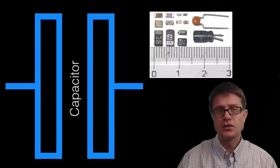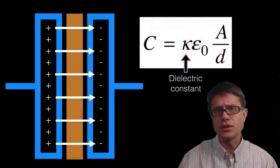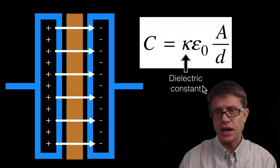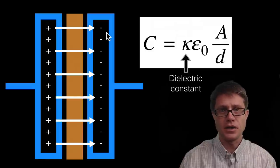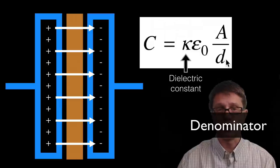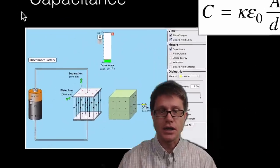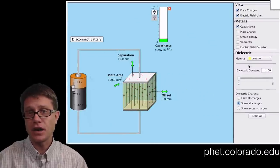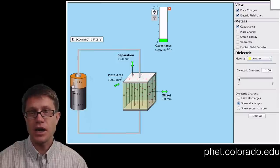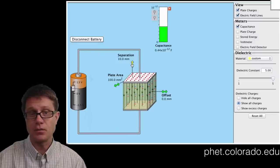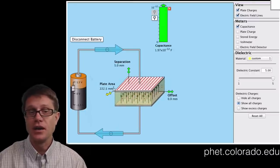Now let's move to the capacitor. A capacitor has two plates and charge builds up on either side, creating electric field lines where the potential energy is stored. To increase capacitance we put a dielectric in the middle. The equation includes the dielectric constant, the permittivity of free space (a constant), the cross-sectional area in the numerator, and the displacement — the distance between the two plates — in the denominator. In this simulation I will slide the dielectric in between the capacitor plates. As I increase the dielectric constant using Teflon, paper, and glass, the capacitance increases. Decreasing the separation between the two plates increases capacitance, and increasing the cross-sectional area also increases capacitance.